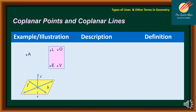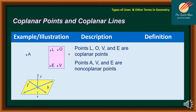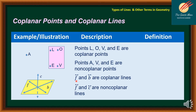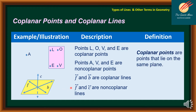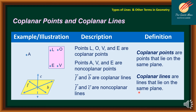The next terms are coplanar points and coplanar lines. From our illustration on the left side, points L, O, B, E are coplanar points because they are lying on the same plane. However, points A, B, and E are non-coplanar points because they are not lying on the same plane. Lines F and B are coplanar lines because they are lying on the same plane. Line F and line C are non-coplanar lines. Coplanar points are points lying on the same plane, and coplanar lines are lines that lie on the same plane.